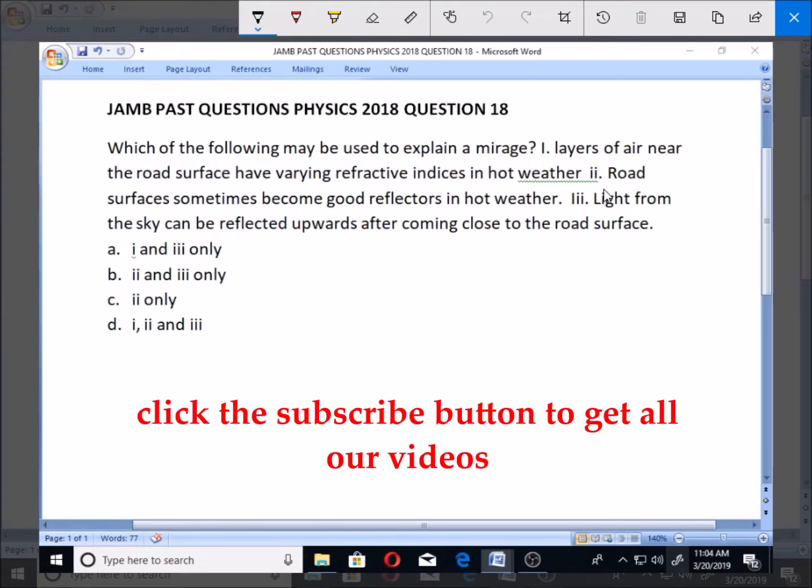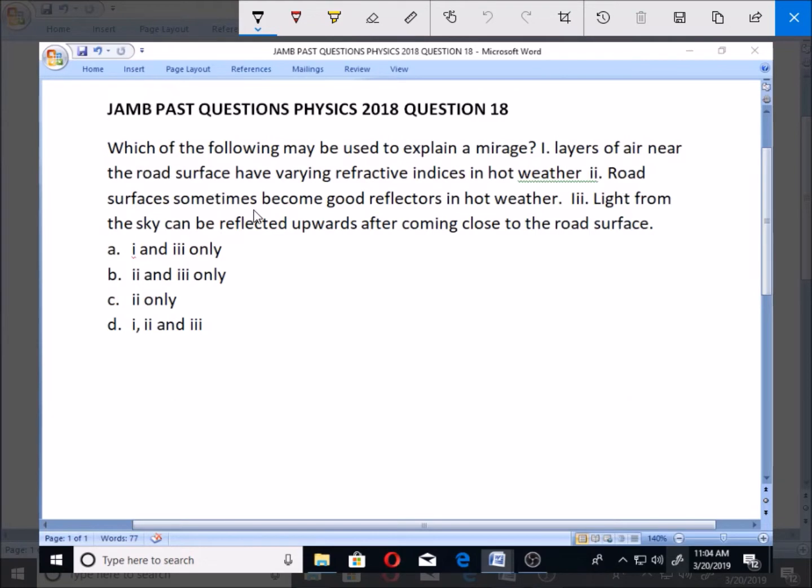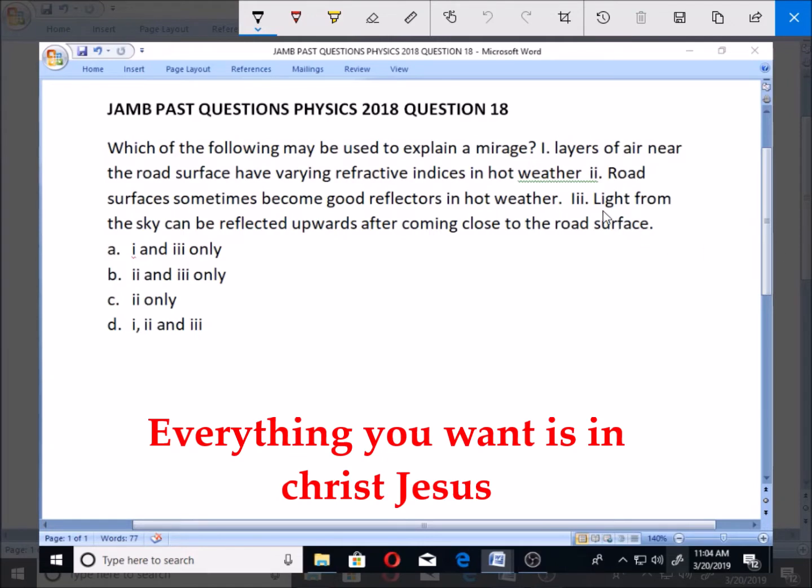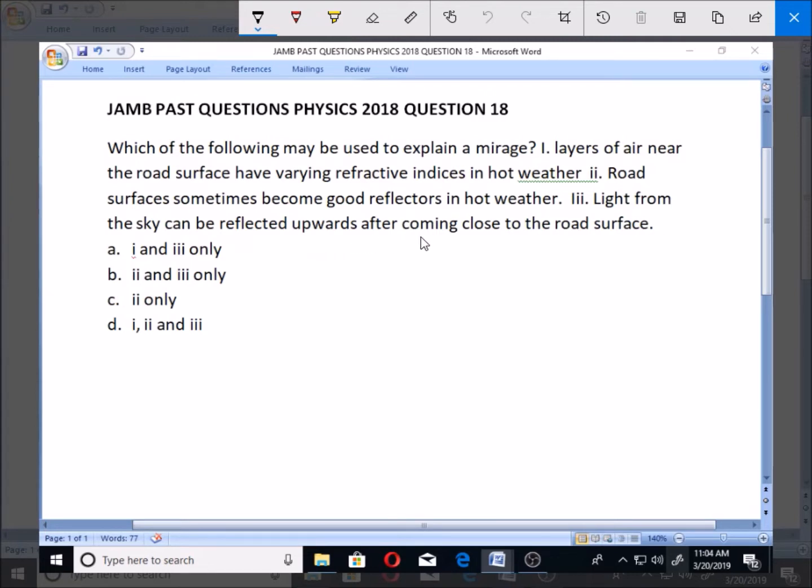II. Road surfaces sometimes become good reflectors in hot weather. III. Light from the sky can be reflected upwards after coming close to the road surface.